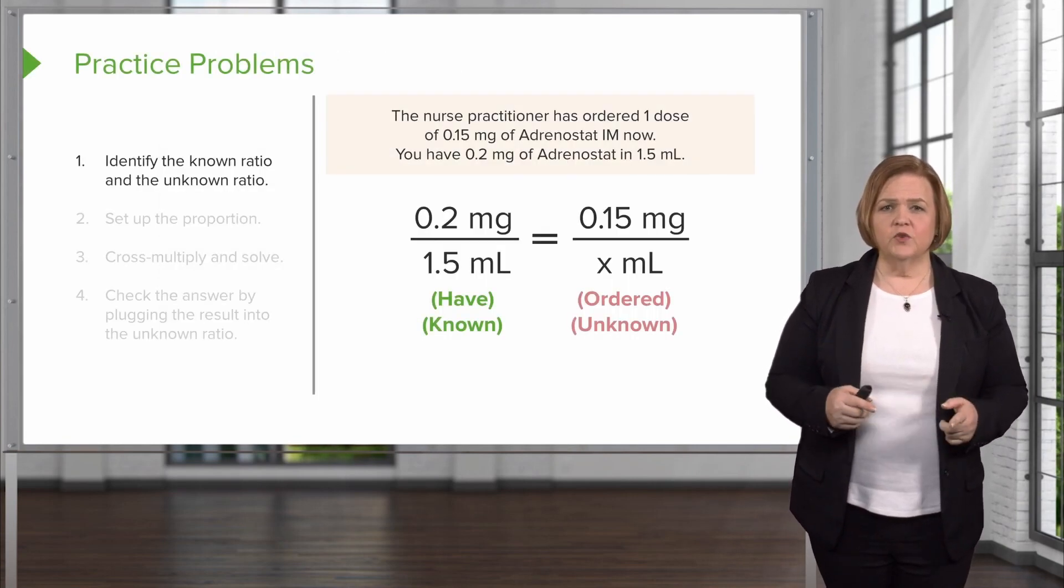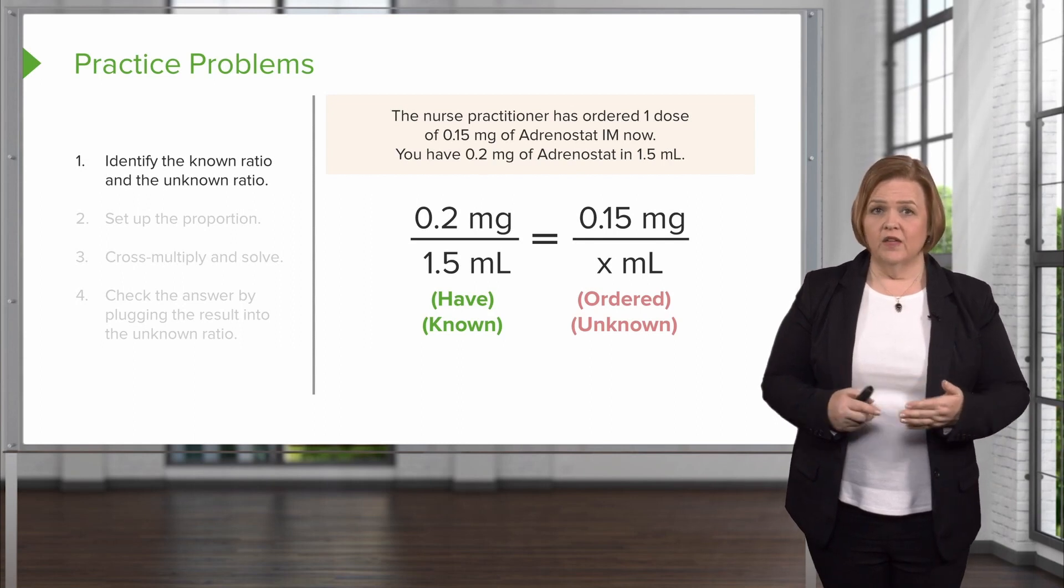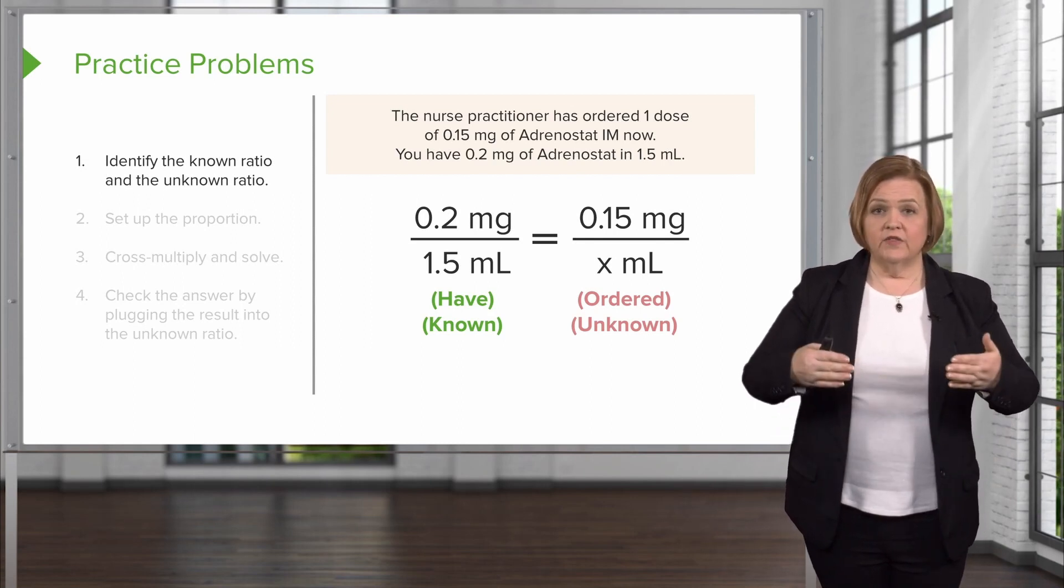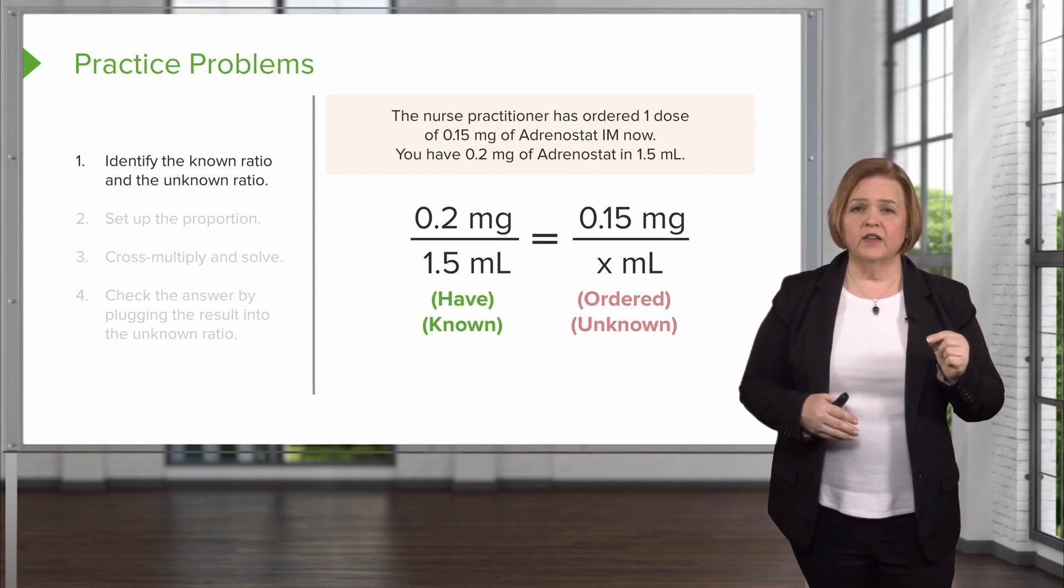So you've got the order there. The nurse practitioner has ordered one dose of 0.15 milligrams of adrenostat IM now. That means you don't wait. They want to give it right now. You have 0.2 milligrams of adrenostat in one and a half milliliters.